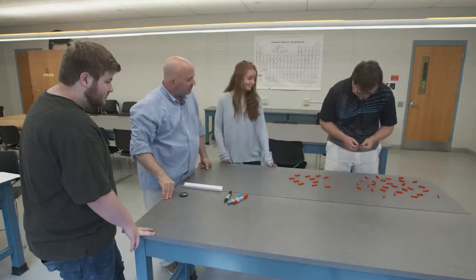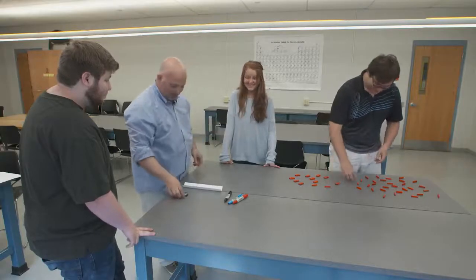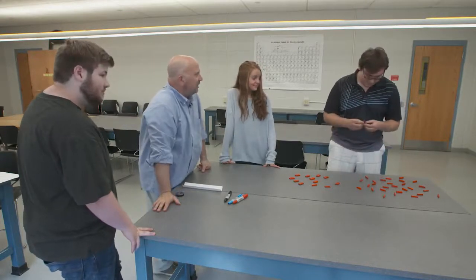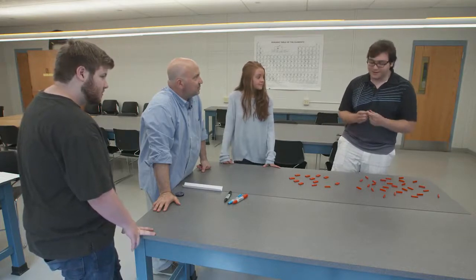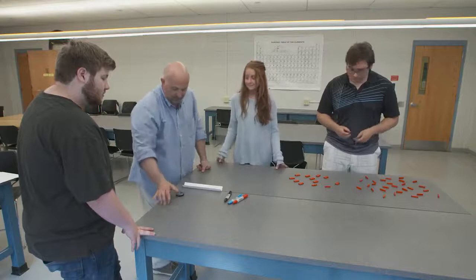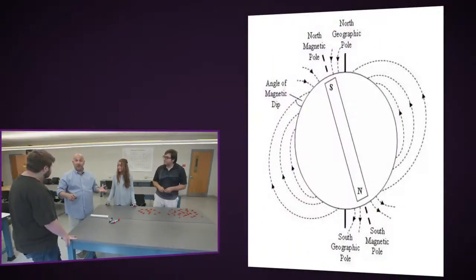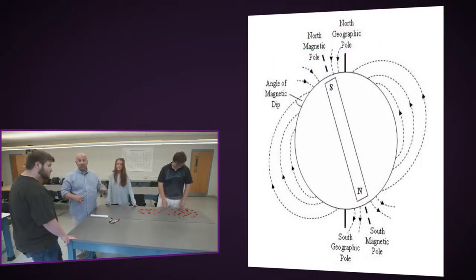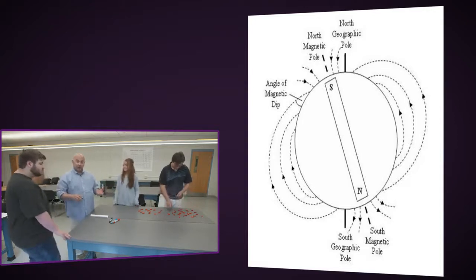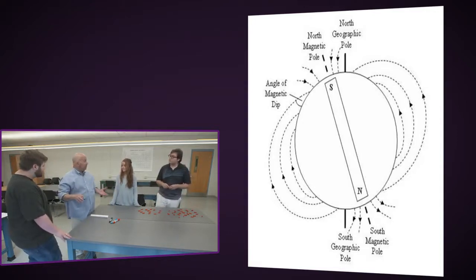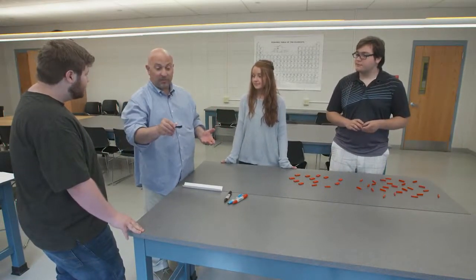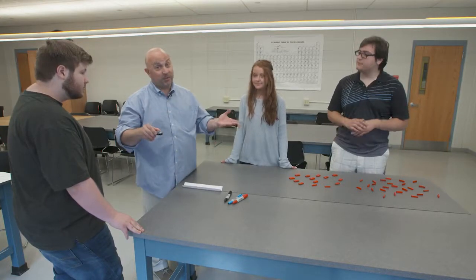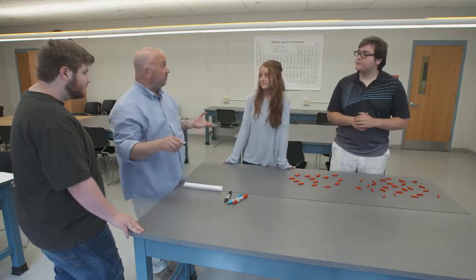Jeff is organizing his magnet collection. These magnets have a north pole and a south pole, which equate to a positive and negative charge. The Earth is like a big magnet with a positive and negative charge at opposite ends. Earth's magnetic field is generated by the liquid outer core, and it's what helps us navigate using a compass, although most of us use GPS on our phones now.